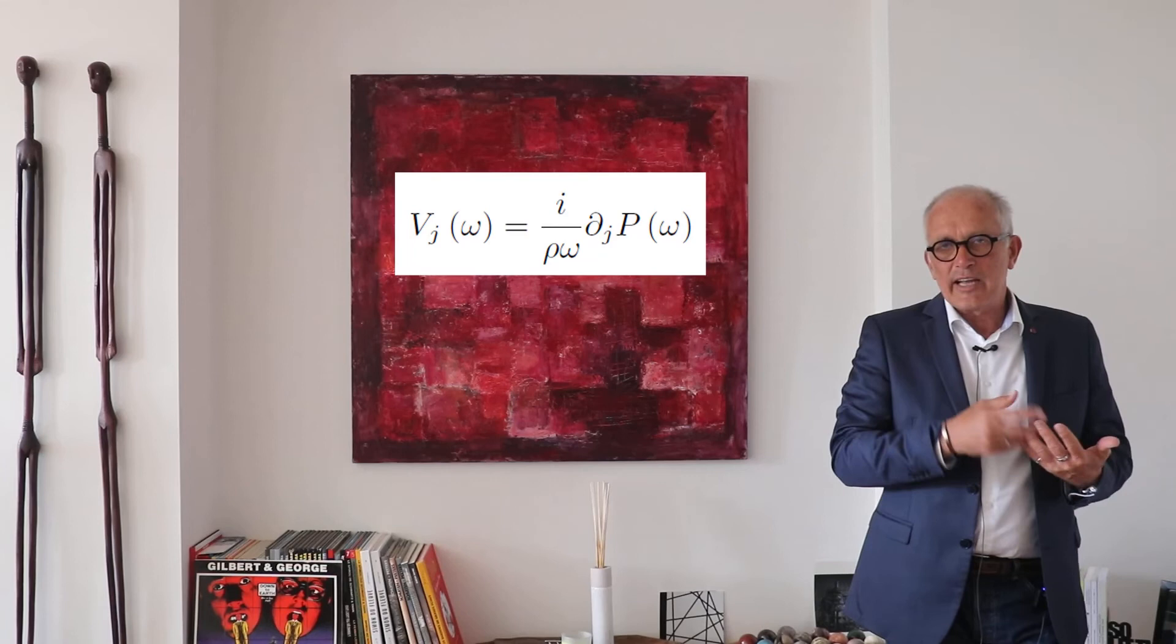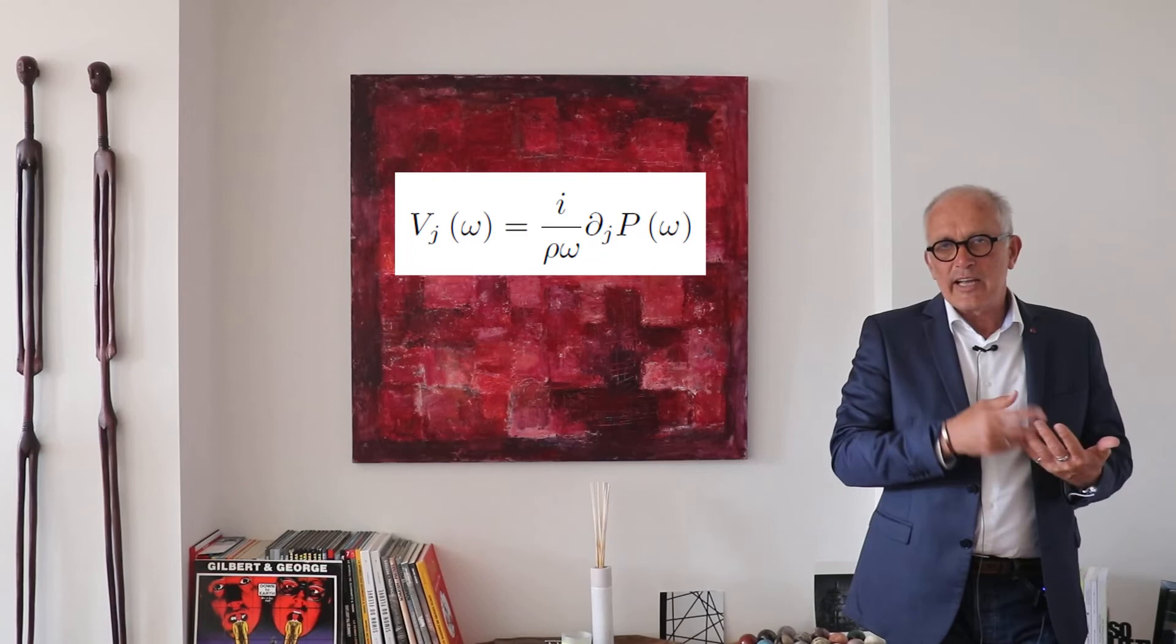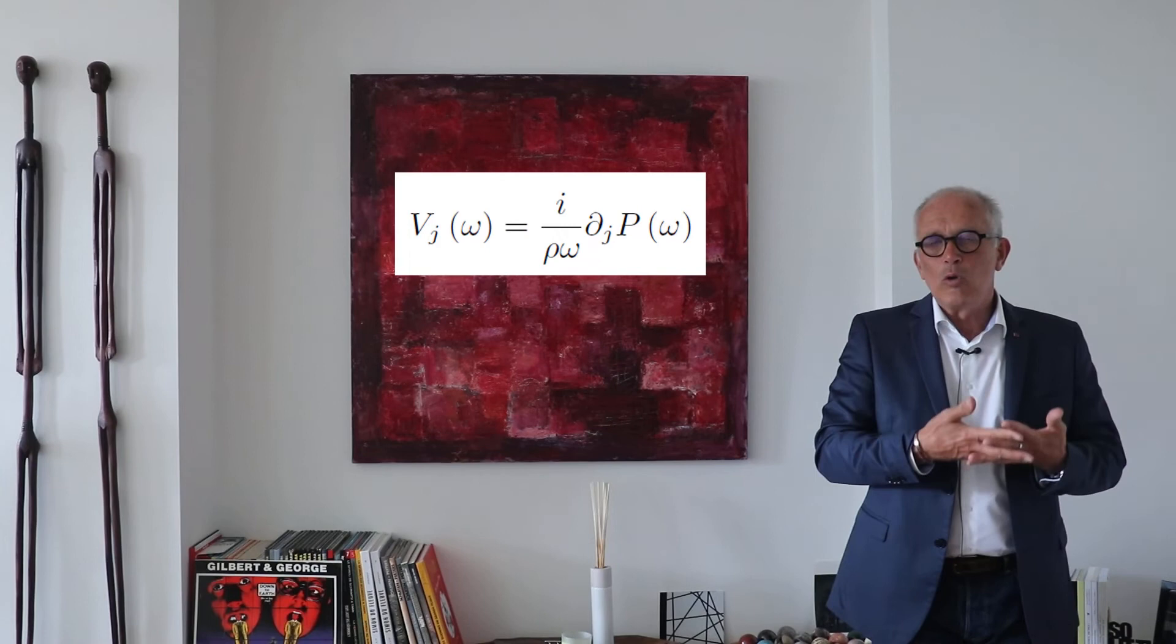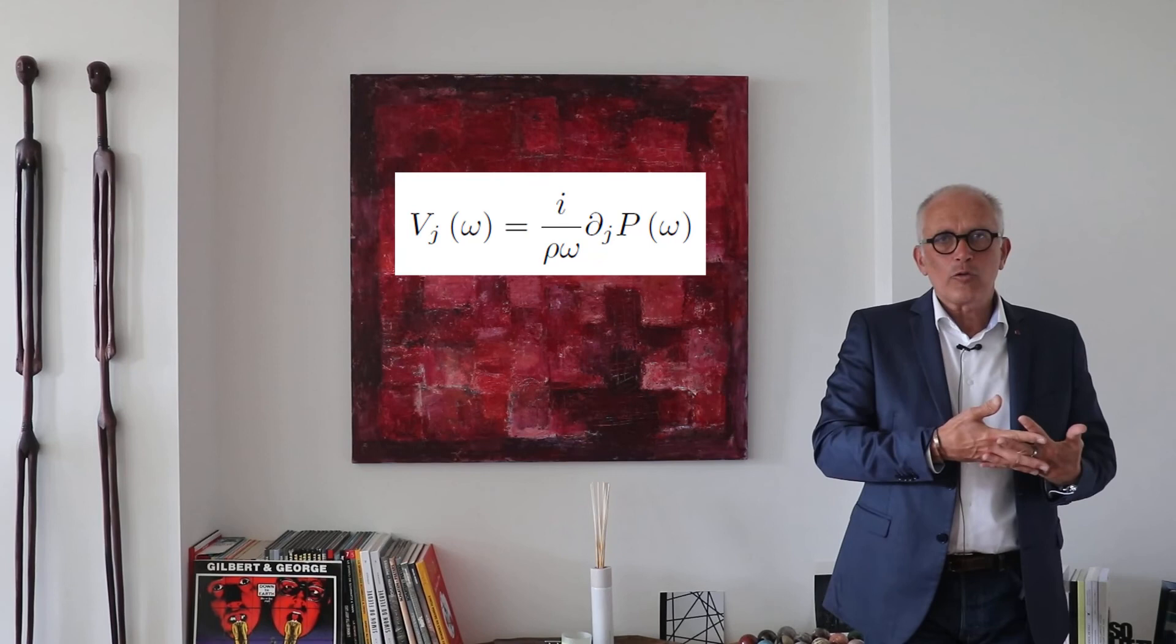You see here that the acoustic velocity, so the spectrum of the oscillation velocity of a particle in a given direction, is simply equal to i divided by rho omega times the pressure gradient or the derivative of the pressure in that direction.